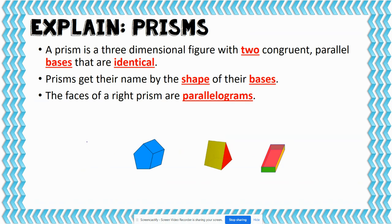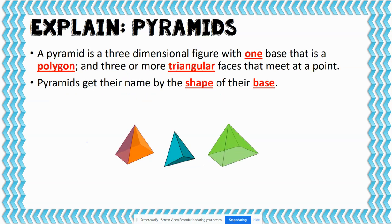A prism is a three-dimensional figure with two congruent parallel bases that are identical. Prisms are named by the shapes of their bases, and the faces are always parallelograms. Pyramids are three-dimensional figures that have one base that is a polygon and three or more triangular faces that meet at a point. Both pyramids and prisms get their names from the shape of their base.